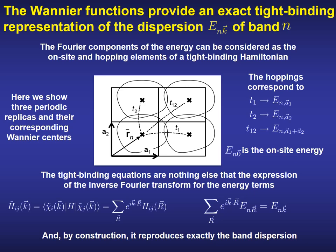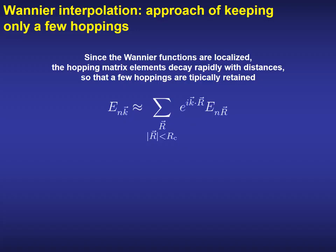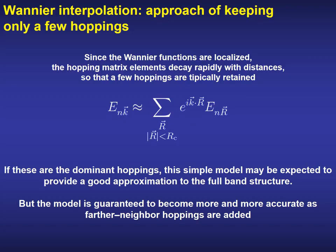By construction, this could reproduce exactly the band dispersion. However, since the Wannier functions are localized in real space, the hopping matrix elements decay rapidly with the distances between the centers of the Wannier functions. Therefore, only a few hoppings can be retained. This approach has the advantage of being systematically improvable — the only thing that we have to do is to increase the range of interaction between the Wannier functions.